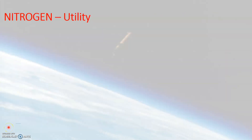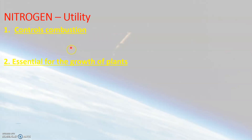Nitrogen being the most abundant component of the air, we will now learn about the important uses of nitrogen in the air. We are going to learn about three important uses: nitrogen gas controls combustion, nitrogen is essential for the growth of plants, and nitrogen gas is useful in flushing food packages. First, let us see how nitrogen gas controls combustion.